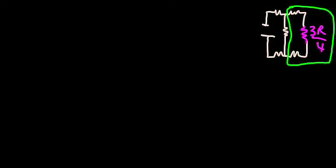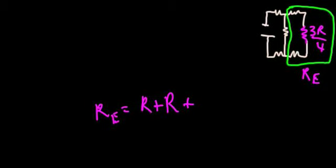Now again, we have three resistors all in series. So the equivalent resistance will just be the sum of those three. So it will be R plus R plus 3R over four.